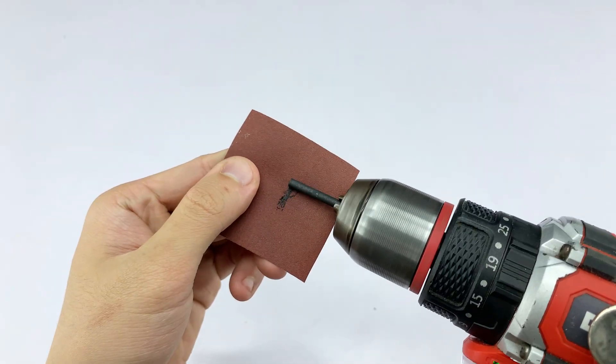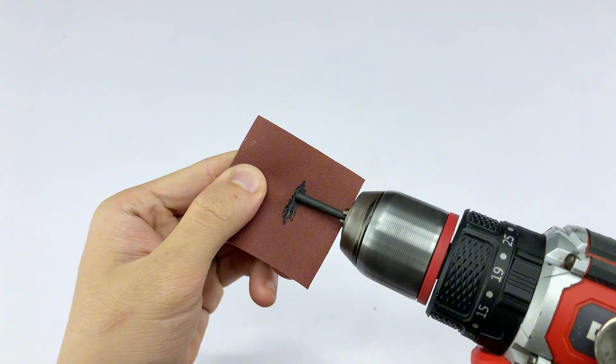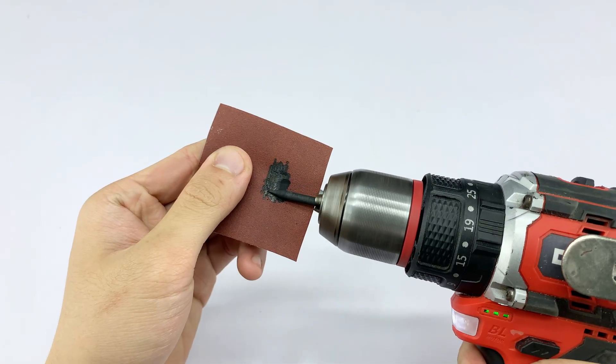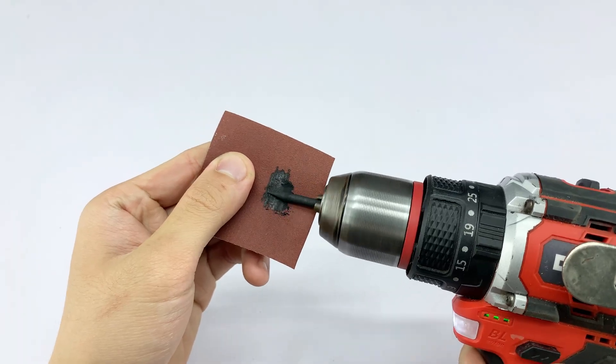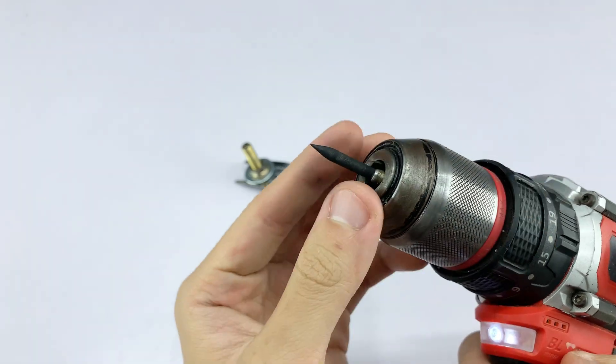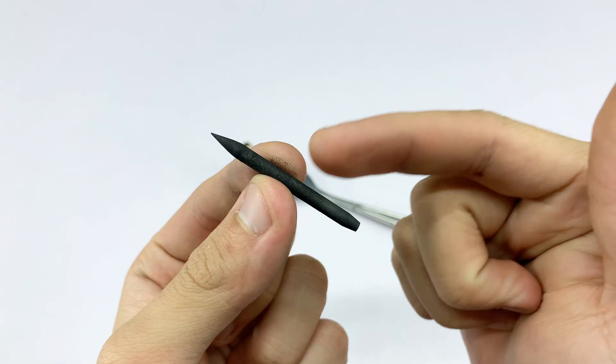I'm using sandpaper to sharpen one end of the carbon rod into a fine point while the drill spins it. This sharp point will concentrate the heat, making our tool highly effective for precise work. Look at that sharp point. It's perfect for our needs.